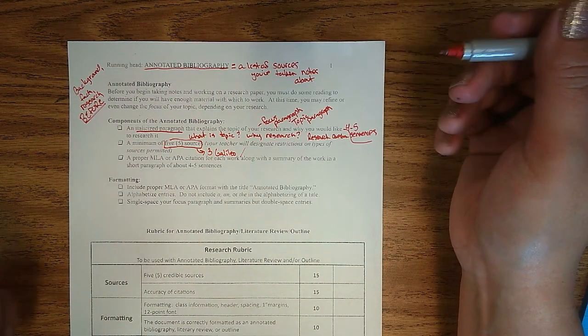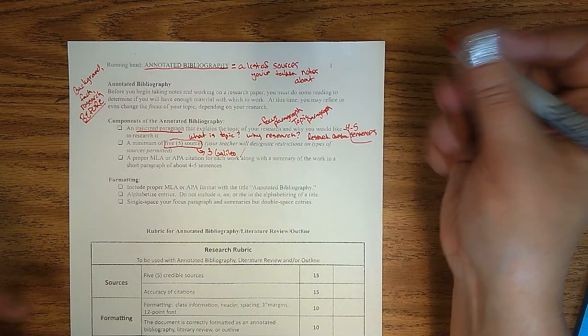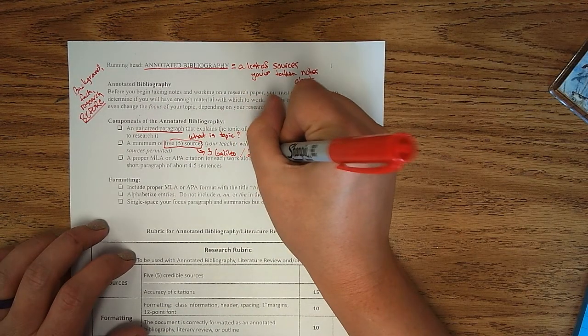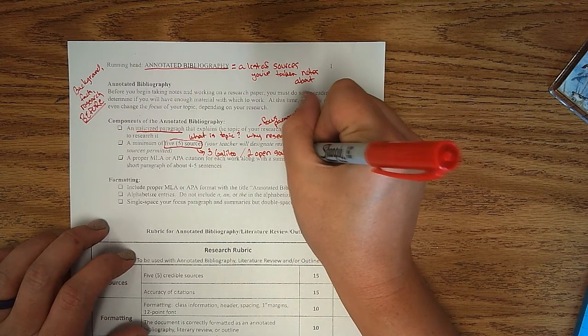In the perfect world, all five would come from Galileo. But at this level, you should be able to discuss the credibility of a source. Two can be open sources. No matter what, your sources must be credible.